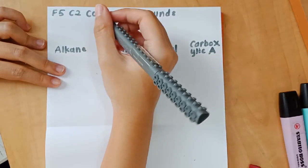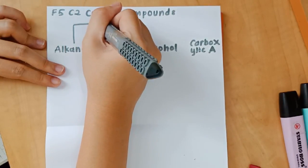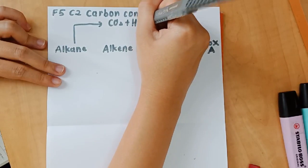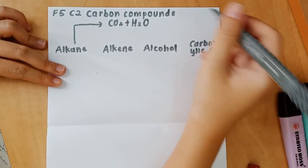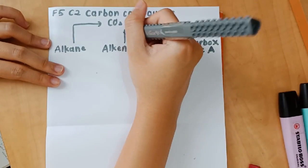So I started off by writing the four main carbon compounds in the middle. We have alkane, alkene, alcohol and carboxylic acid. And how this mind map works is that every time you draw an arrow, you end the arrow with the products.